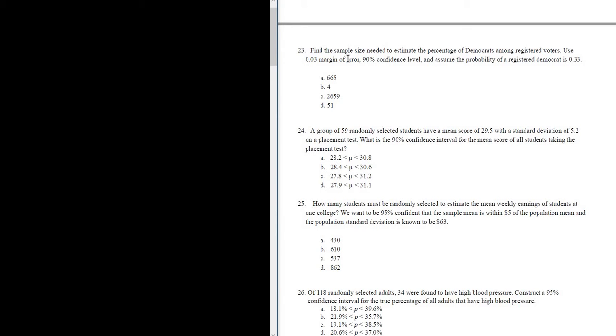Number 23. Find the sample size needed to estimate the percentage of Democrats among registered voters. Use 0.03 margin of error. So that's E. Capital E is called the margin of error, 0.03.